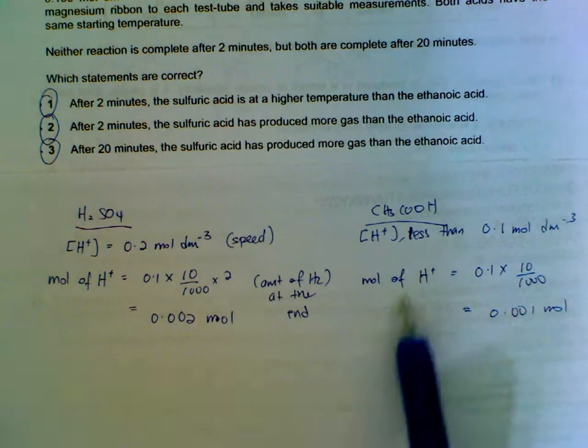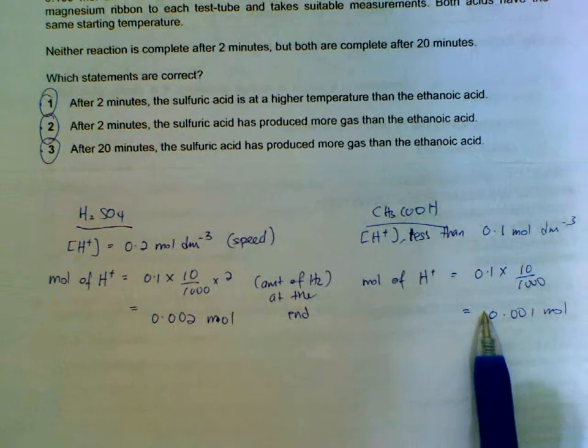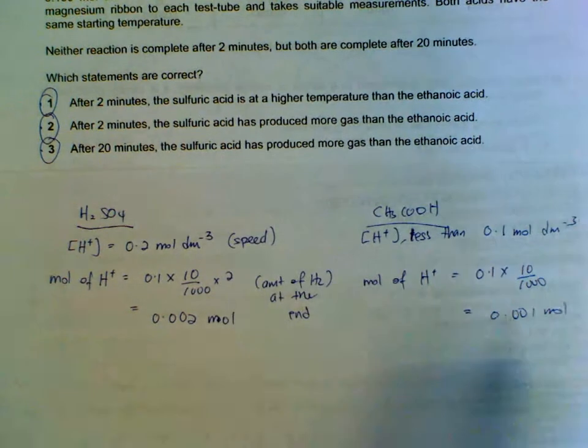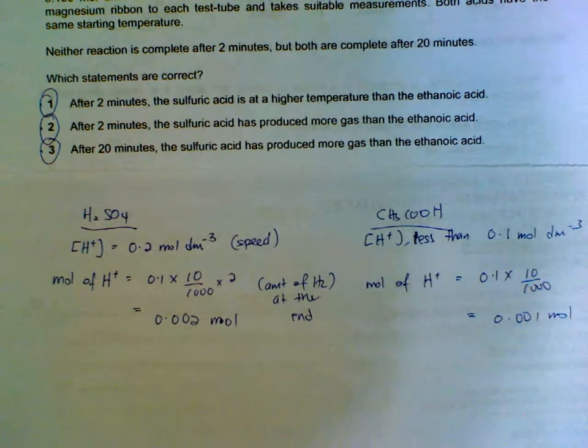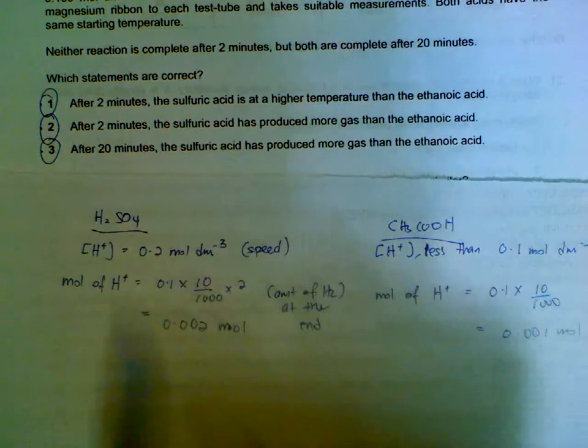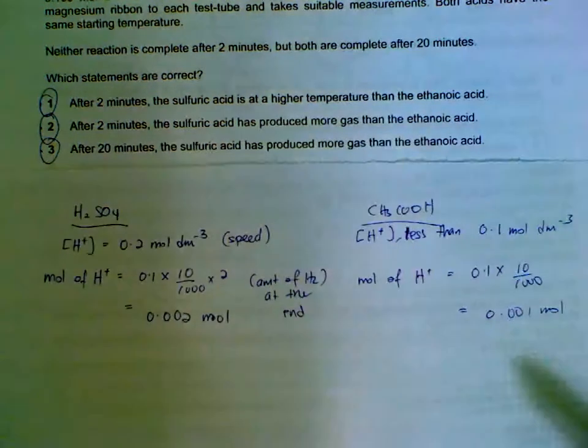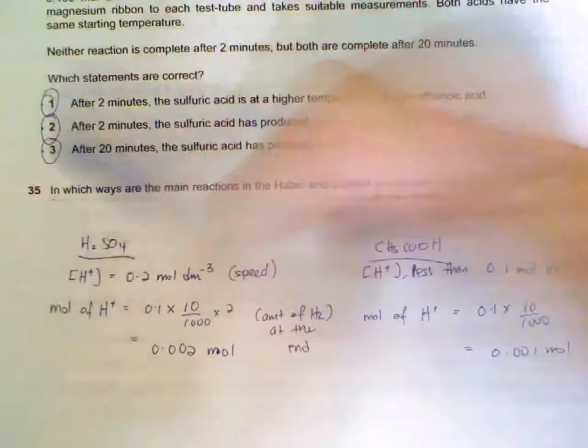So again, we will have more hydrogen gas produced for sulfuric acid compared to ethanoic acid. If the number of moles of H⁺ that can be released are the same, then we will have the same volume. But in this case, sulfuric acid has more. We will collect more gas. So statements 1, 2, and 3 are correct.